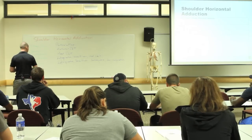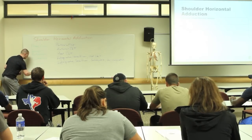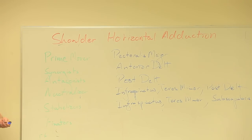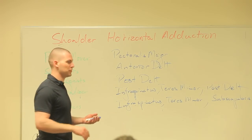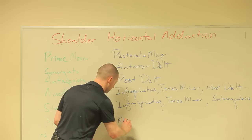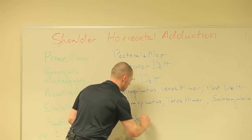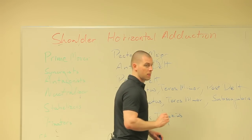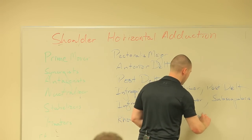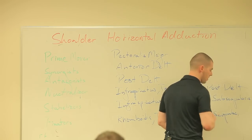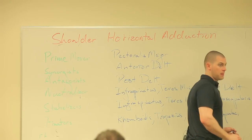Fixators. Who are my fixators? Muscles that stabilize the scapula. I have five muscles that cross my axial scapular joint. You guys remember what they were? Rhomboids, trapezius, levator scapulae.